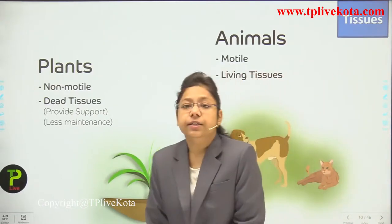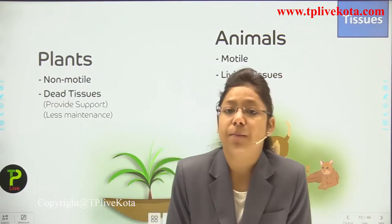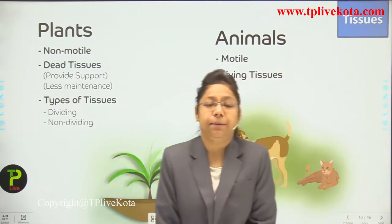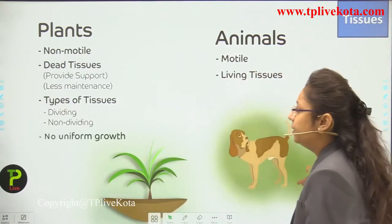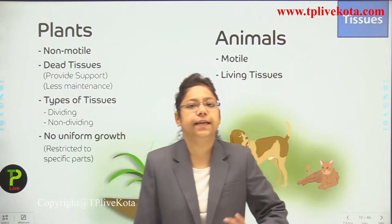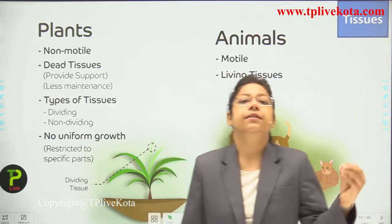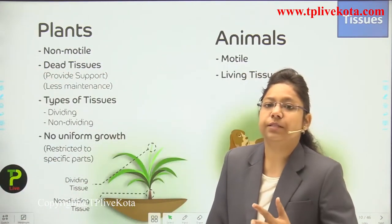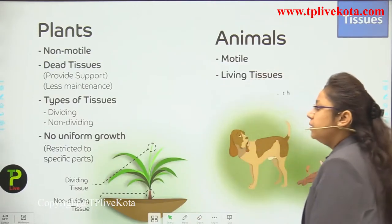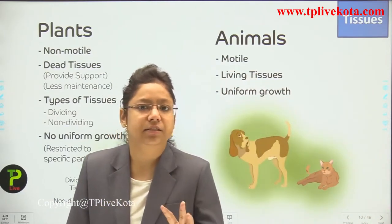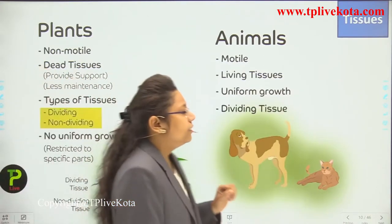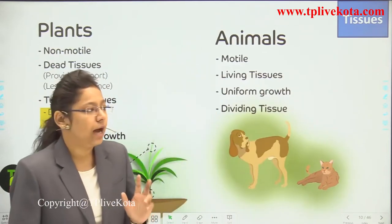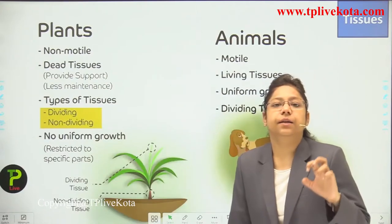Plant tissues are of two types: dividing and non-dividing. Plant cells keep dividing and grow throughout their life, but this does not occur in animal cells. Animals grow only at a particular age — for example, human height increases till around 18-19 years, then stops because tissues become permanent and no longer divide or grow.